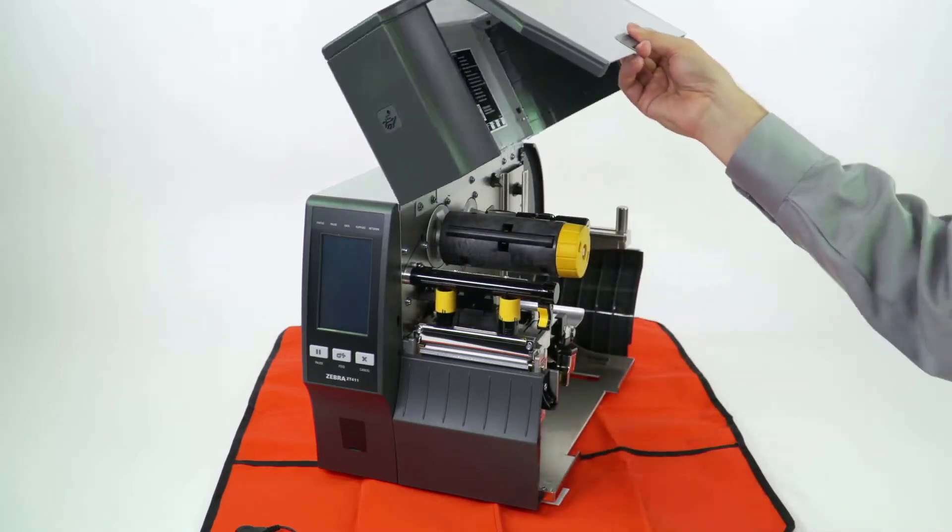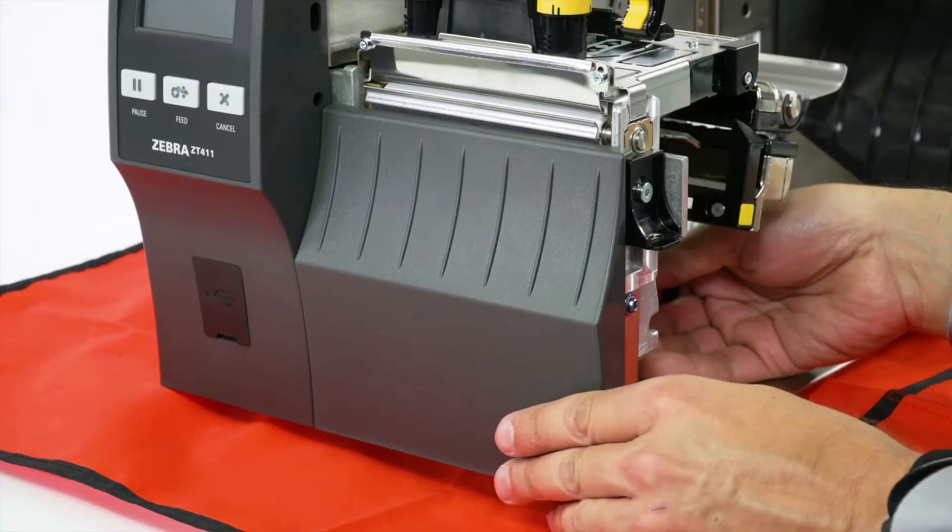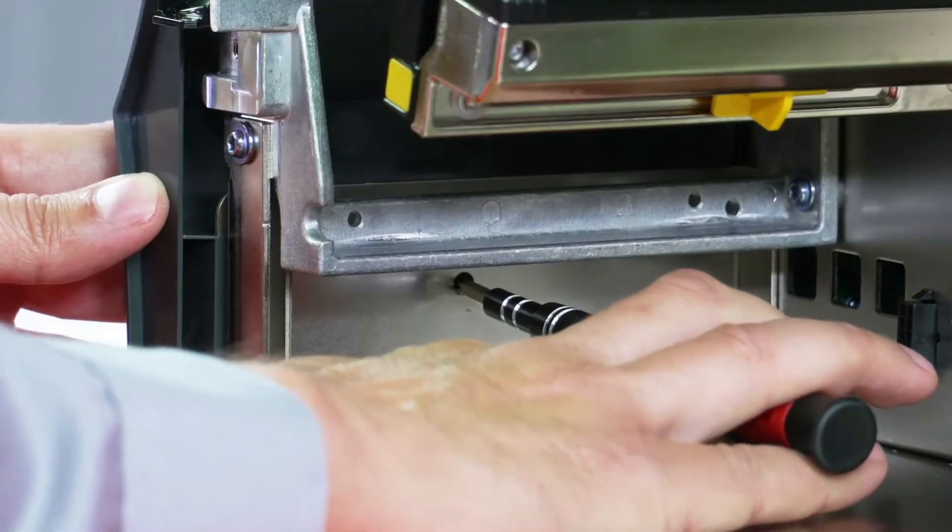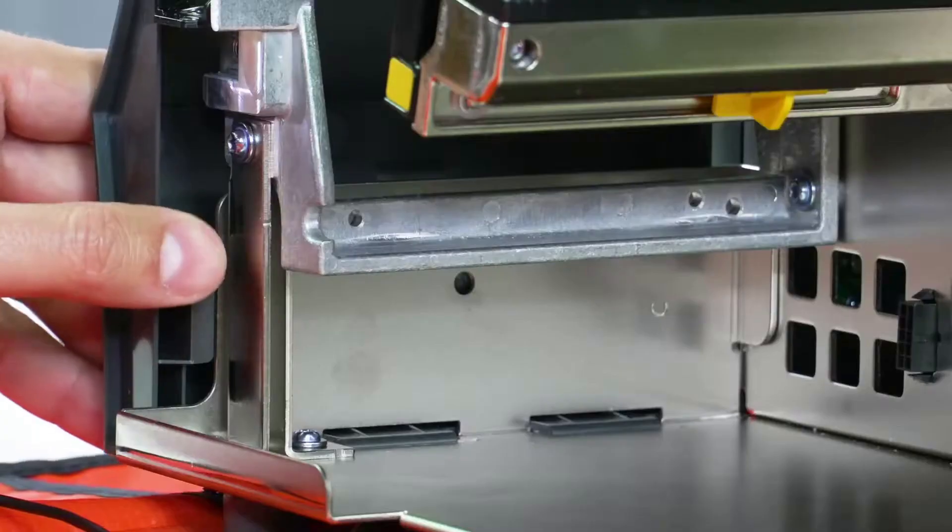Open the media door. Remove any media and ribbon. To remove the front panel, press on the detent button, then slide the panel to the side, tip it forward, and release from the printer.